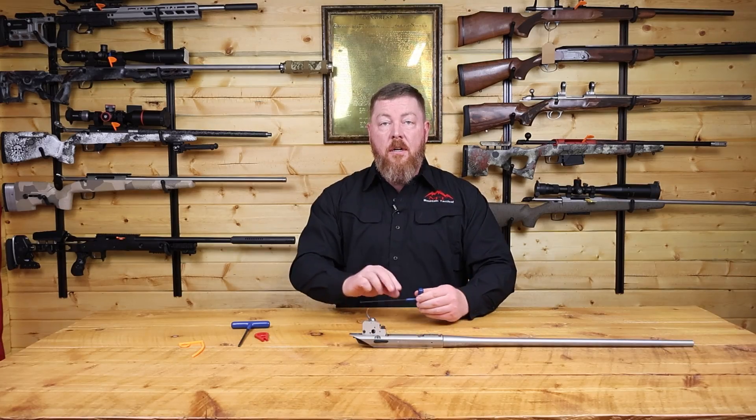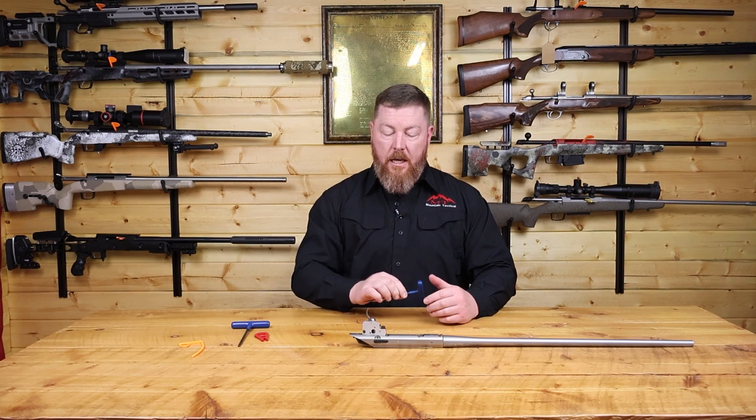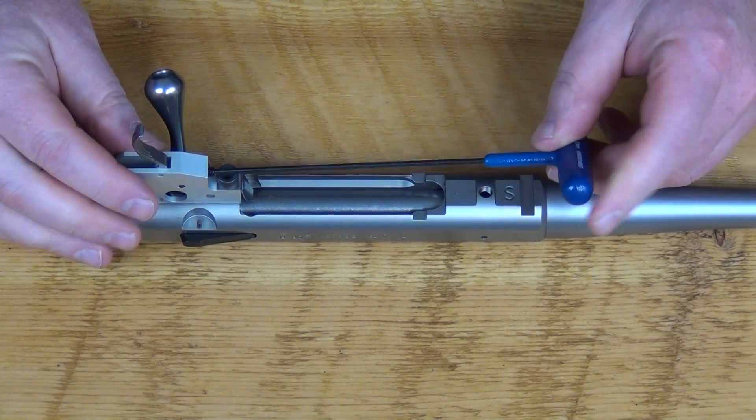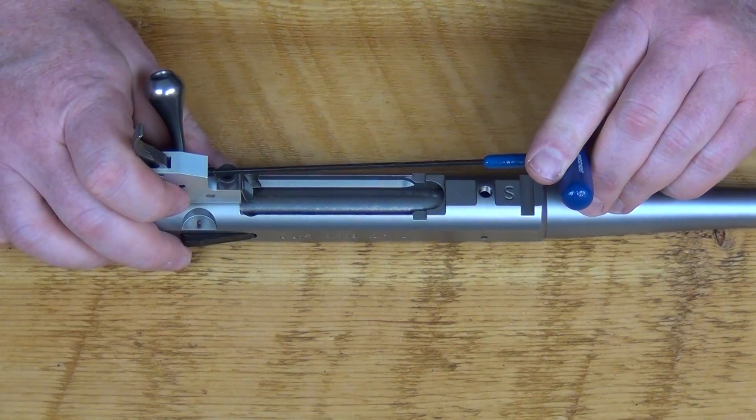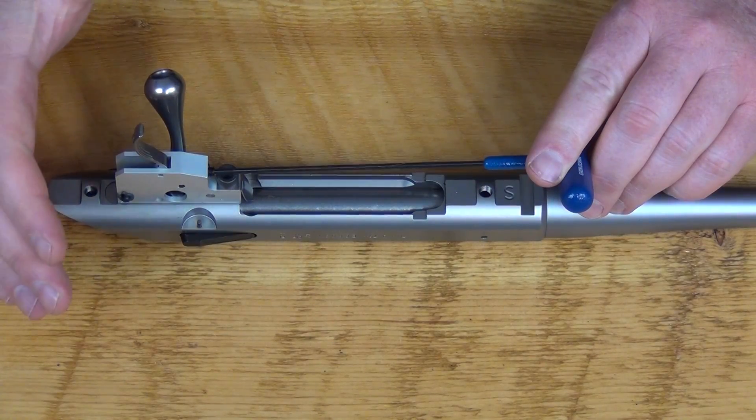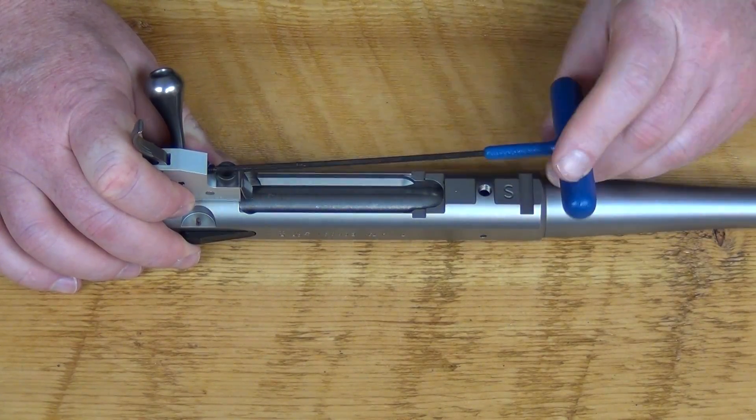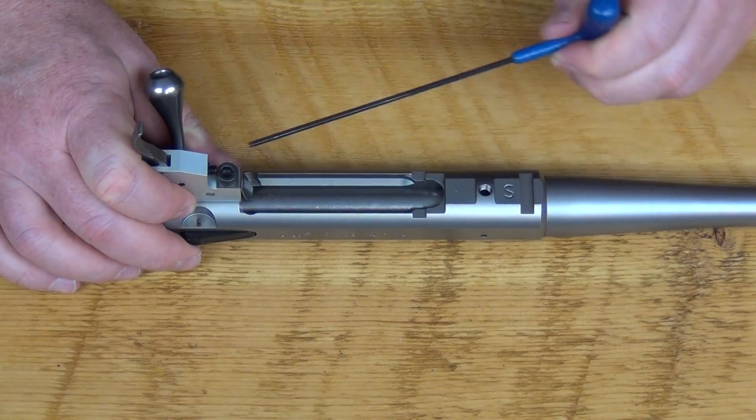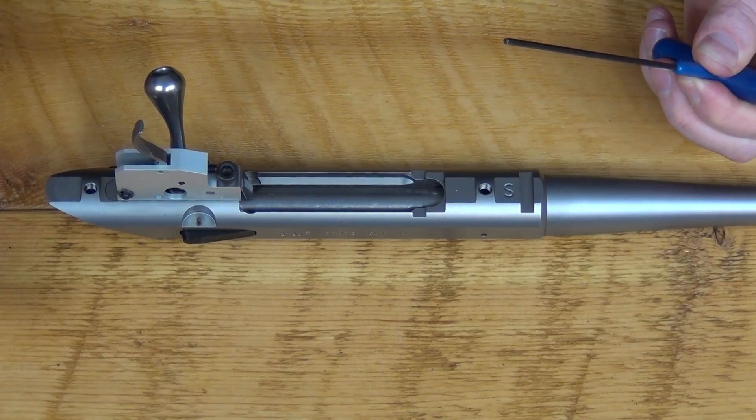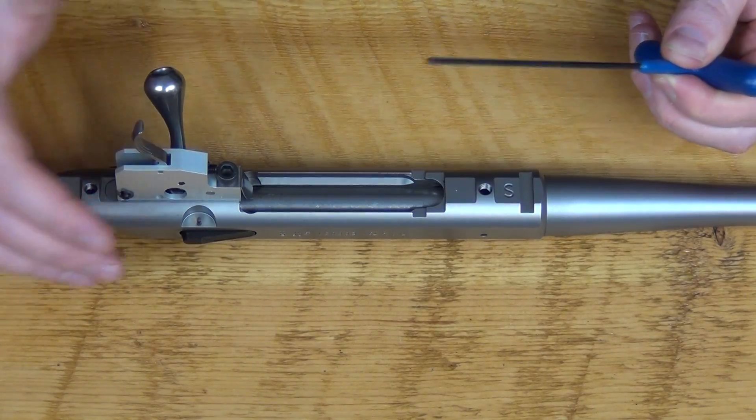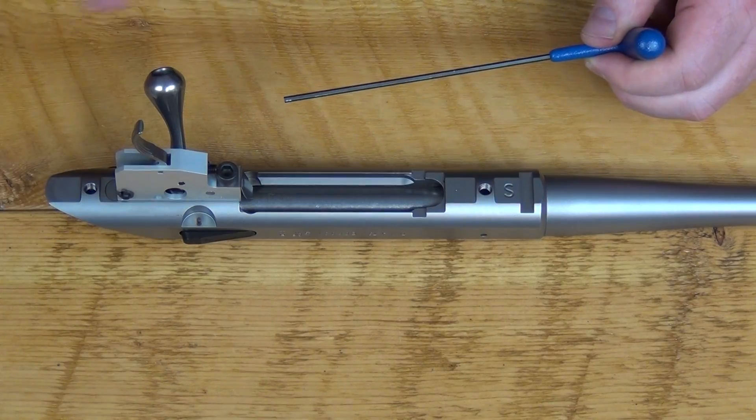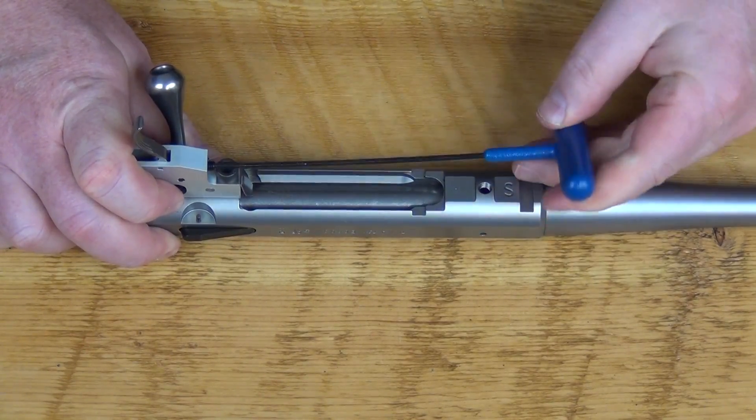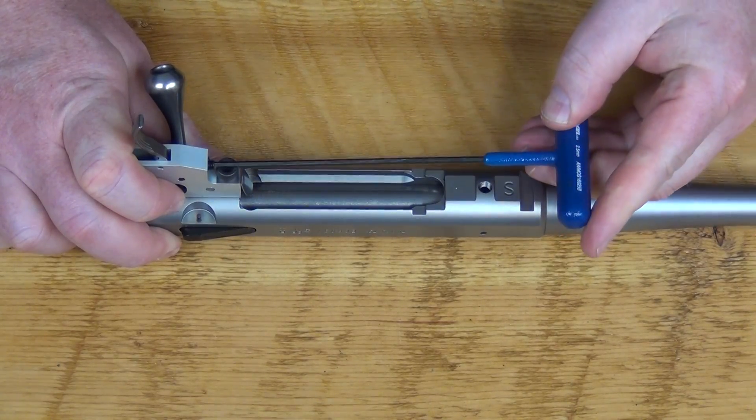To adjust your trigger you just need a 2.5 millimeter Allen key. Lefty loosey, righty tighty. So to reduce the weight of the trigger, unscrew this set screw and you can screw it out to where it's going to stop on this bolt and that's going to give you roughly a two pound trigger pull. Conversely, if you want a heavier trigger pull you can turn this adjustment screw to the right and your trigger weight is going to increase accordingly.